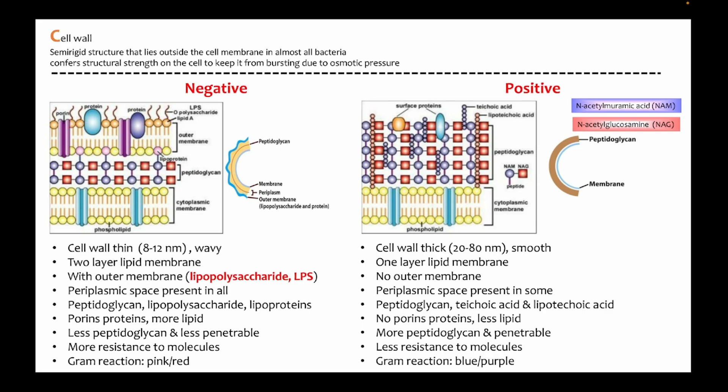Next is the cell wall. Because the cytoplasmic membrane is not strong enough to prevent lysis, bacteria usually have a cell wall encapsulating the cytoplasmic membrane. The cell wall is rigid and confers structural strength on the cell to keep it from bursting due to osmotic pressure. The diagrammatic representation shows the cell wall for gram-negative and gram-positive bacteria.